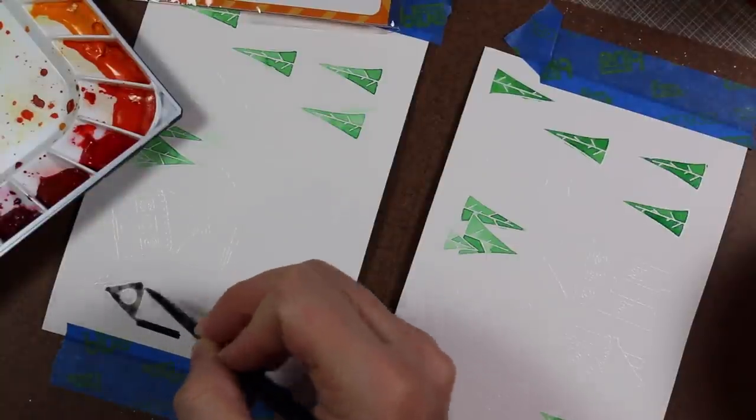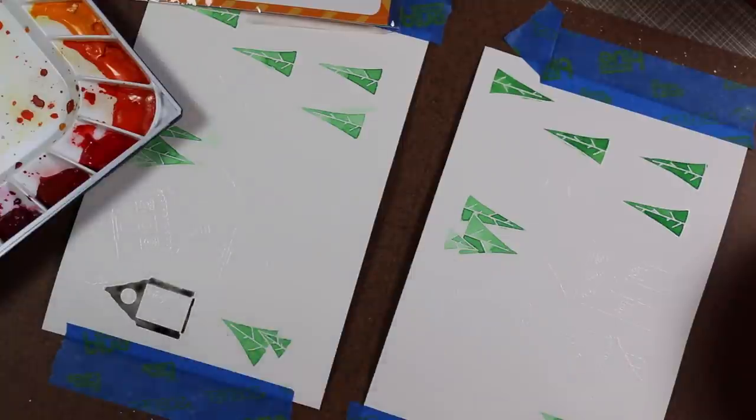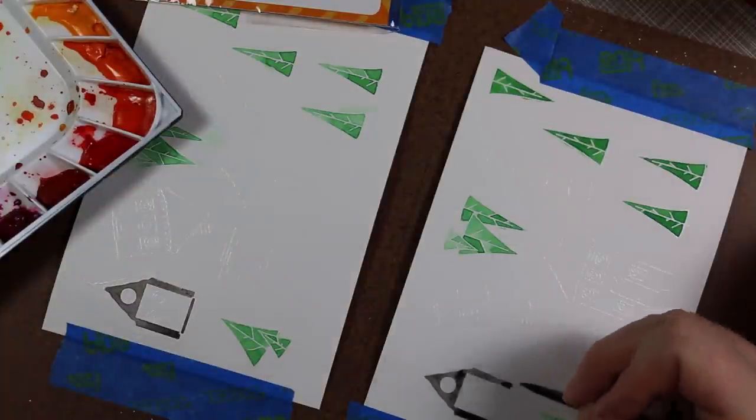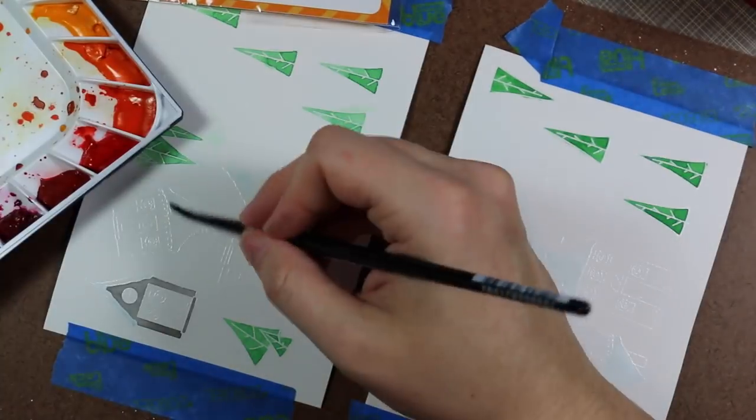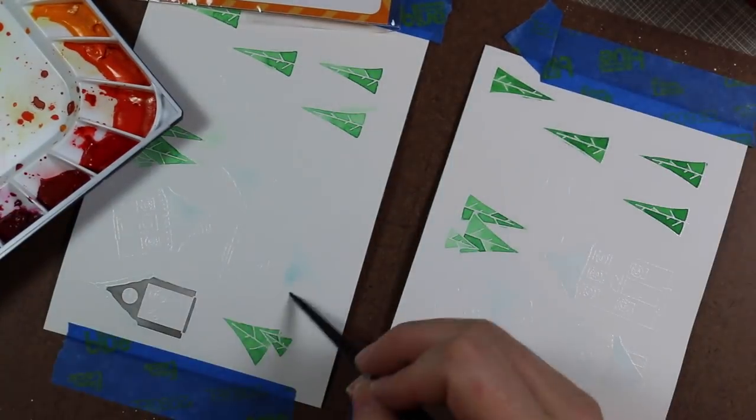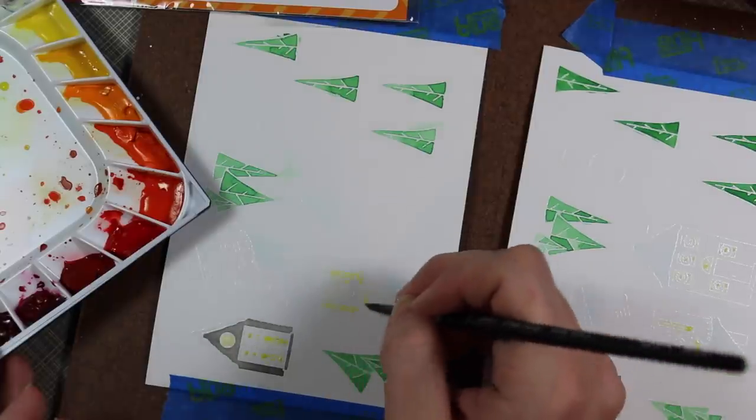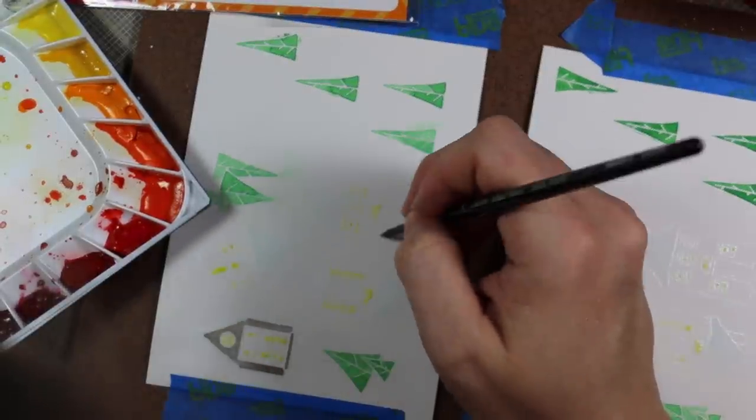I quickly taped them down onto a hardboard, more to hold them in place than anything. Since I'm not doing a full background, I didn't need to tape it down to keep it flat. For all the watercoloring, I am using my Mission Gold watercolors and a size 4 water brush. I super sped this up. It took about a half hour to 45 minutes, I think, to watercolor all of these images.